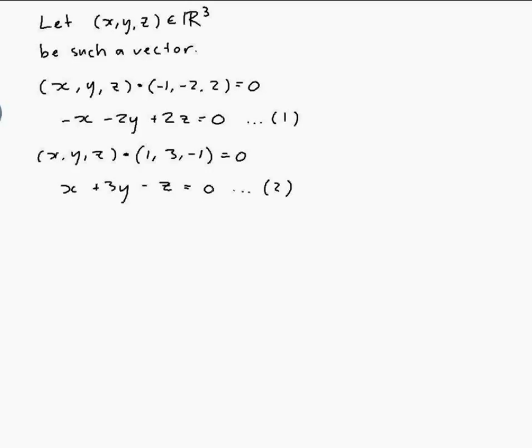So we could get rid of the x by adding those equations together. So equation 1 plus equation 2 gives, so the x's cancel, minus 2y plus 3y is y and 2z minus z is z, so y plus z which is equal to 0. Okay so y is equal to minus z.